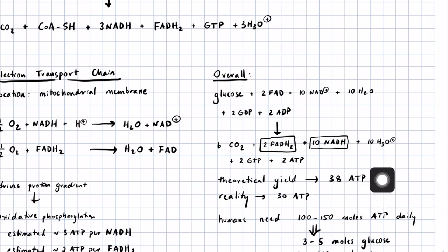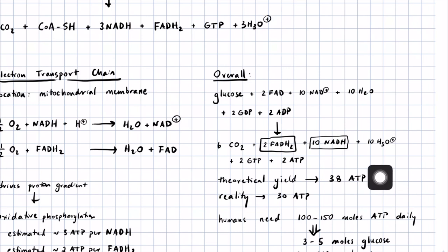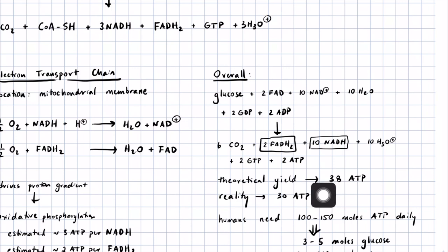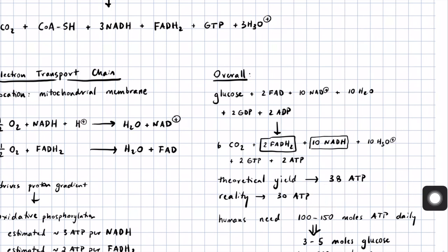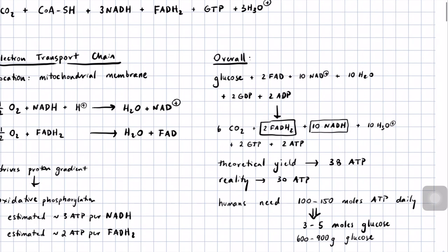Theoretically, you could get about 30 to 38 ATP molecules from one molecule of glucose, taking into account those factors for how many ATP per NADH and FADH2. However, in reality it's less efficient than that. There is leakage of the proton gradient across the membrane, and not every proton that makes its way down the gradient goes through the ATP synthase complex.